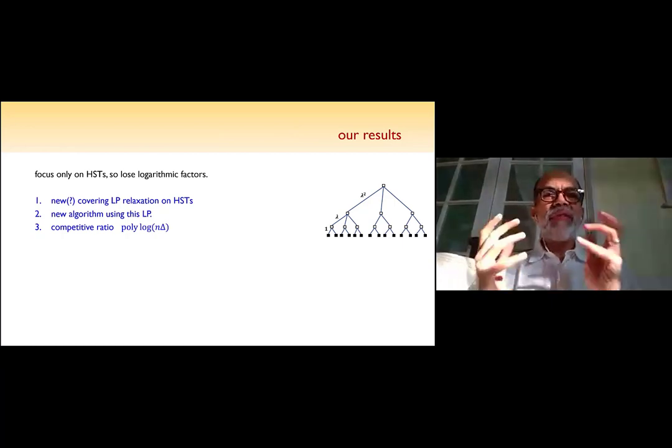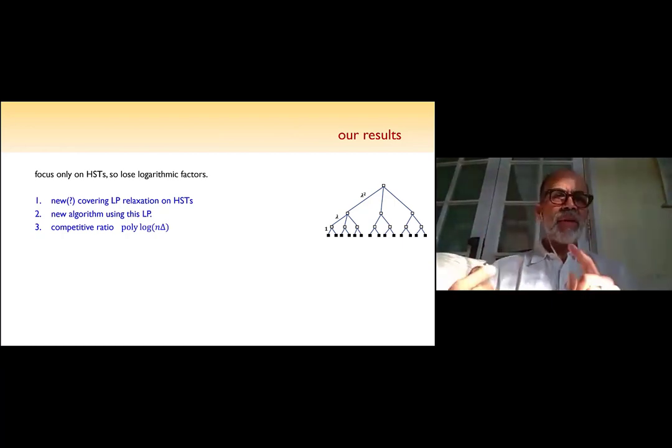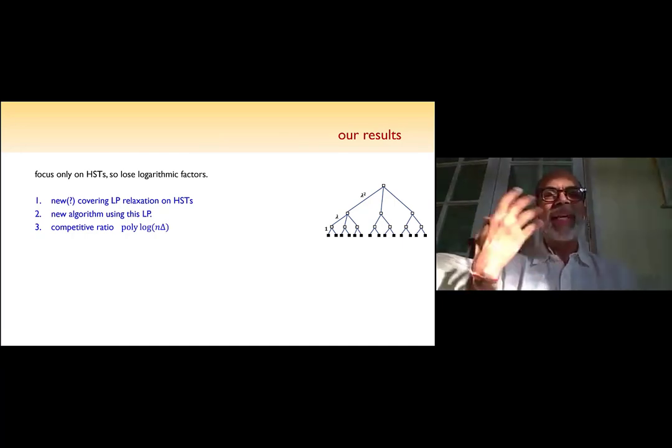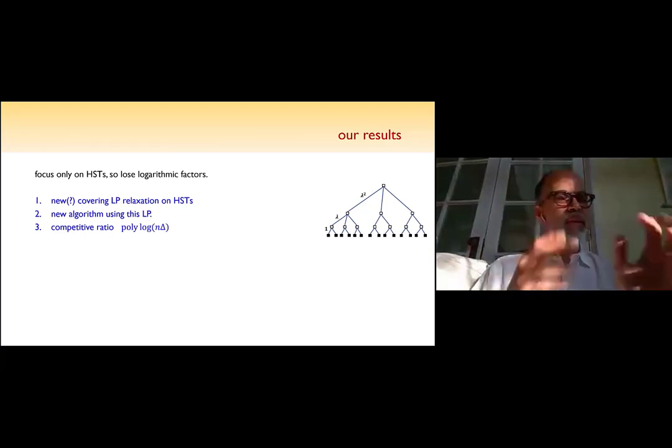Think of lambda as being much larger than one. So the edge lengths increase exponentially as you go up, and all the edges of the same level have the same length. So it's a very well-structured tree. We would like to understand K-server for these trees. Once you understand it for these trees, you lose a log factor more, and you can go to any general metric using randomization. Of course, we are using randomization, so that's fine.